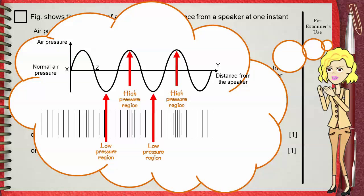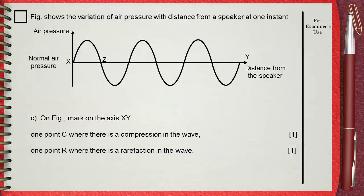So when he asks to point with the letter C where is a compression in our wave? Simply, this is a compression, where air pressure is high. And one point R, this is a rarefaction with point R, where air pressure is low.